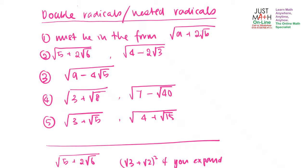This video will look at double radicals, or nested radicals. Double radicals means there is a root and you've got another root inside — this is also called nested. In order to simplify double or nested radicals, you have to arrange them in the format A plus 2 root B. So in this particular case, you have the 2 here, and you can proceed to simplify the double radicals.